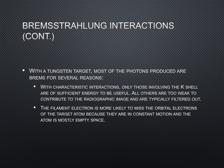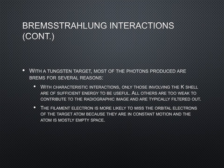In a tungsten target, most of the photons are brems for two reasons. First, with characteristic interactions, only those involving the K-shell are of sufficient energy to be useful — all others are too weak and are filtered out by the 2.5 mm of total filtration built into the tube head assembly. Because tungsten has a K-shell binding energy of 69.5 KEV, only KVP settings of 70 or greater will produce K-characteristic photons; all lower settings result in a beam made up entirely of brems. Second, the filament electron is more likely to miss the orbital electrons because they are in constant motion and the atom is mostly empty space.